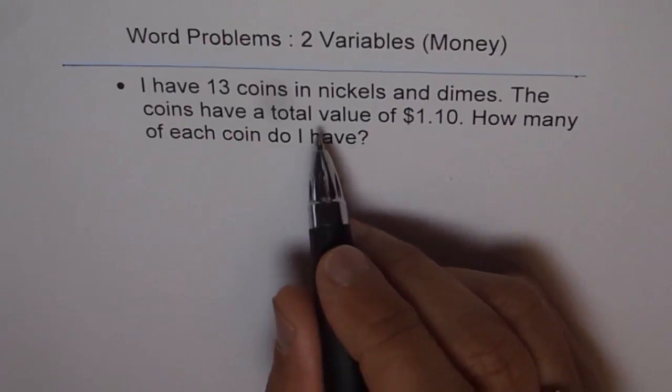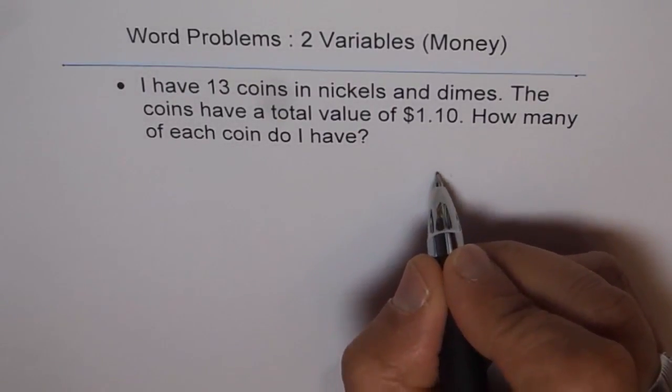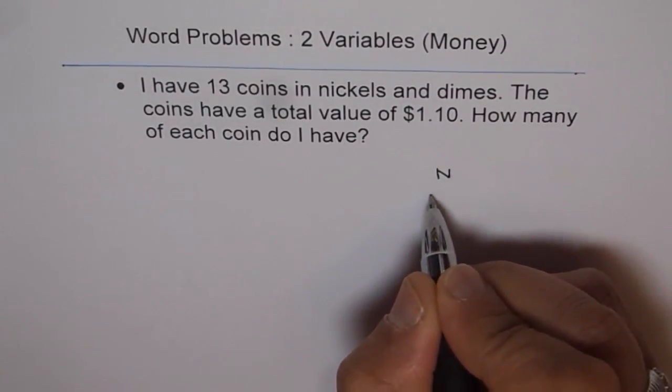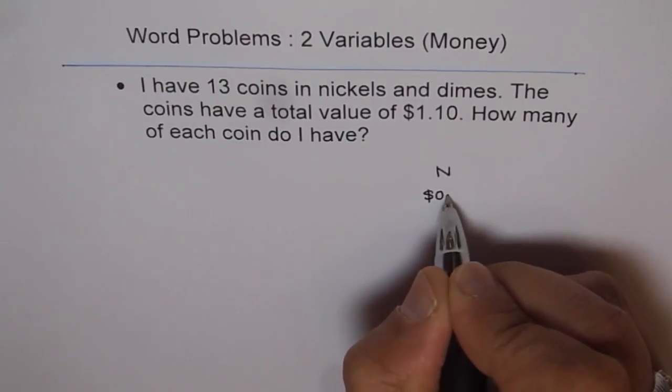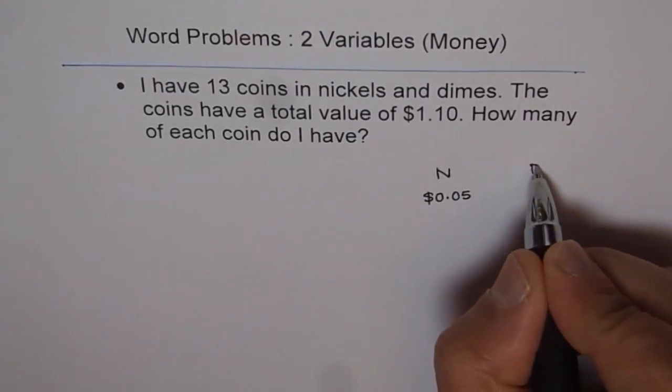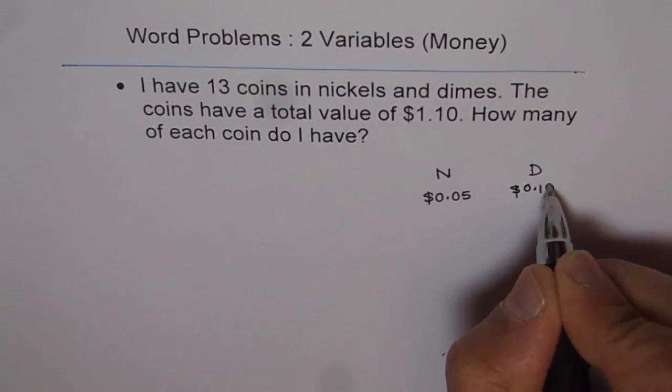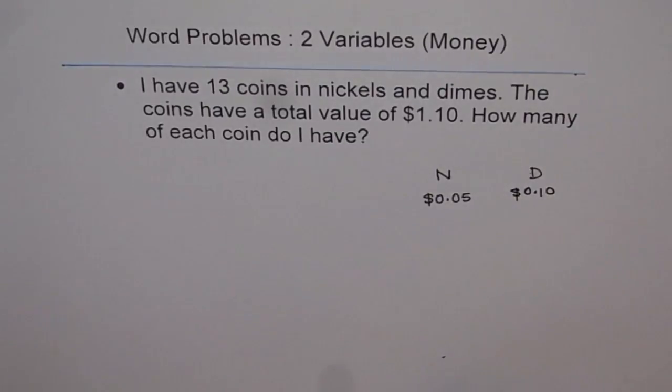When we say we have nickels and dimes, then what does a nickel mean? Nickel means 5 cents. And dimes, let's say D, will mean 10 cents, right? So that is the meaning of nickels and dimes.